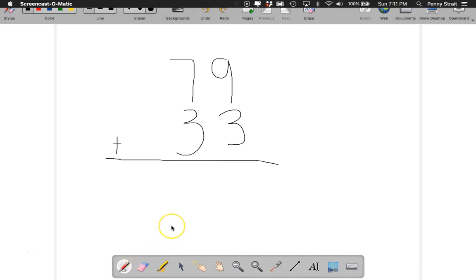In this video, we will add two-digit numbers with regrouping. Notice I have my equation written so that the place values are lined up, the ones are lined up above the ones, and the tens are lined up above the tens. We're going to add 79 plus 33.